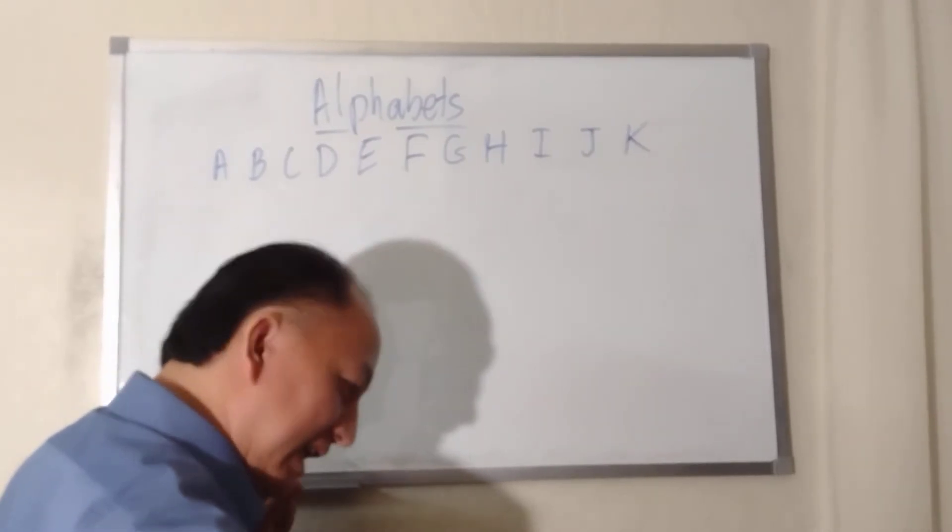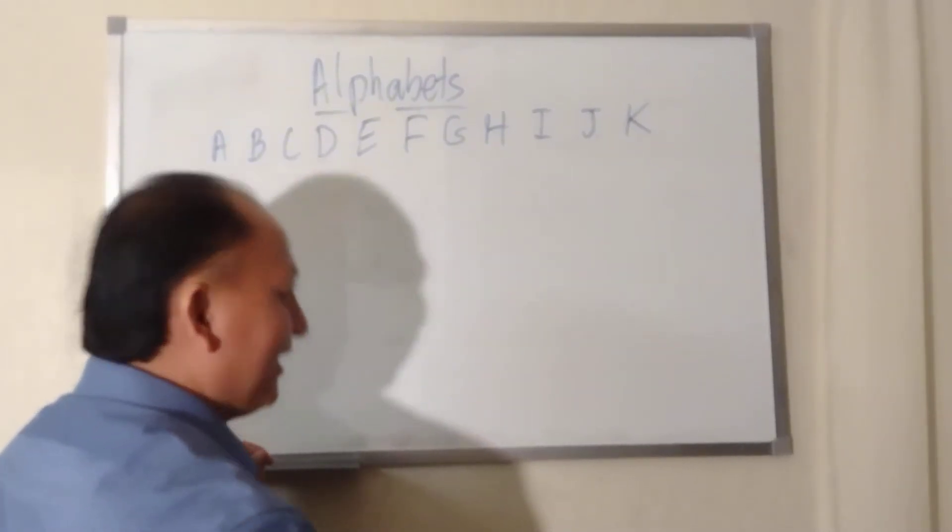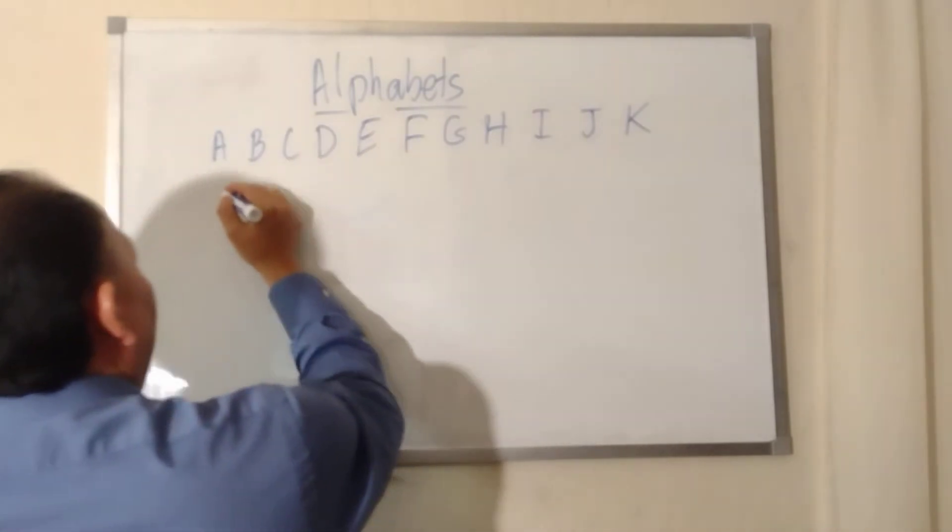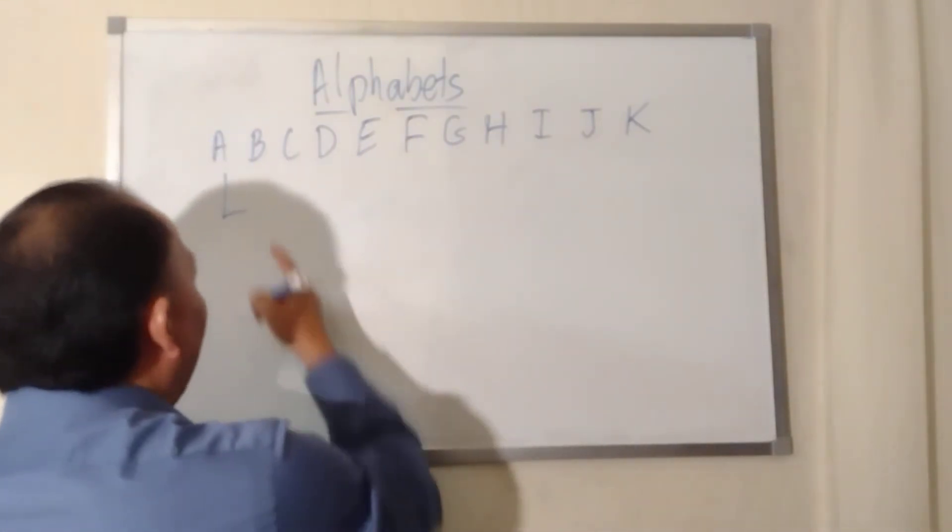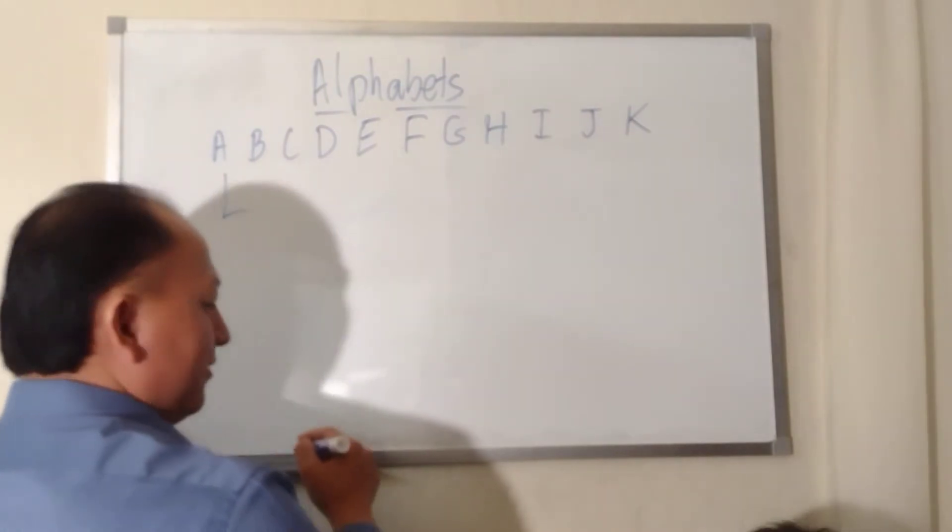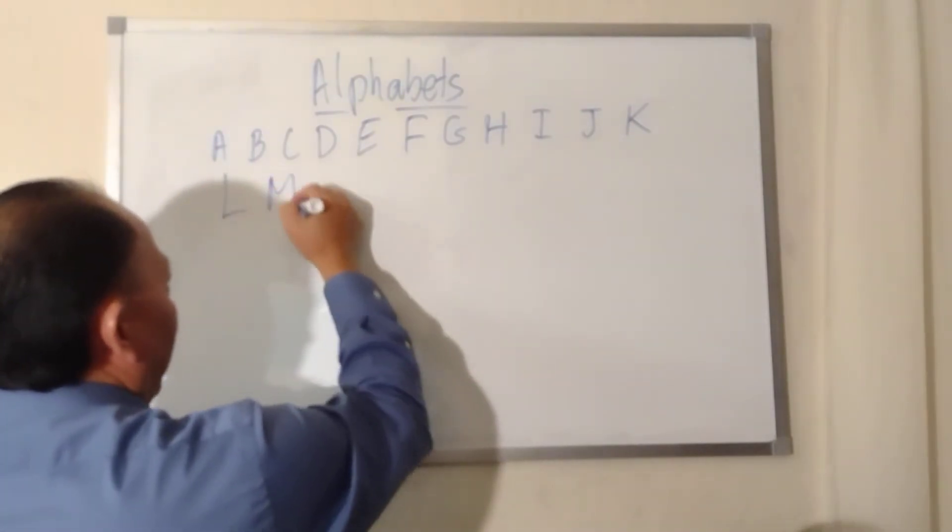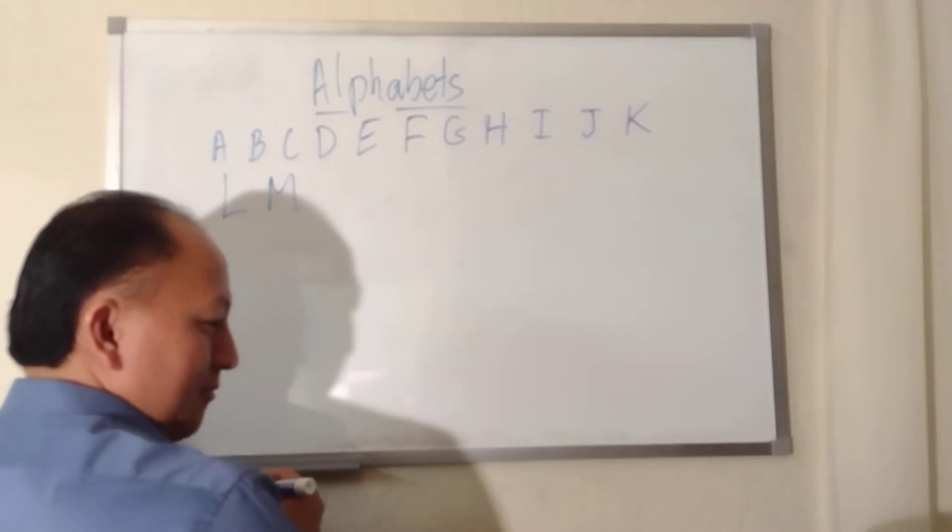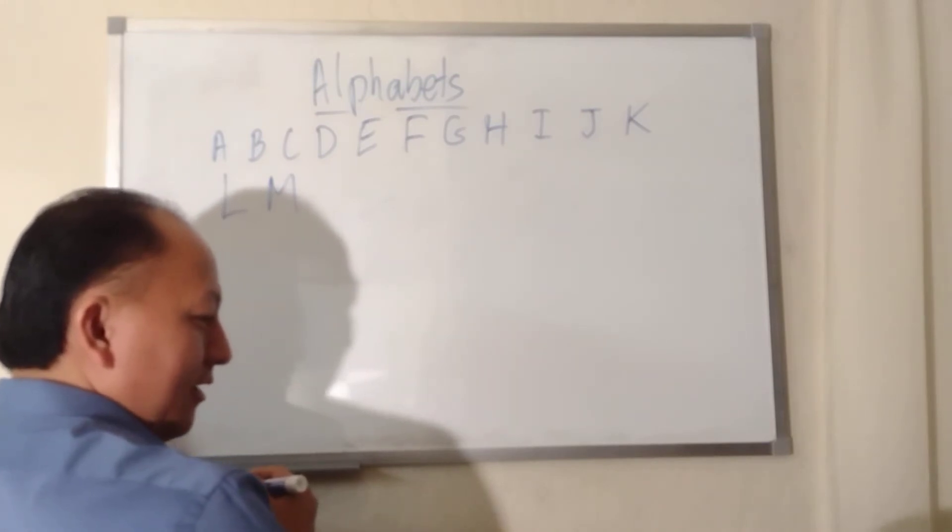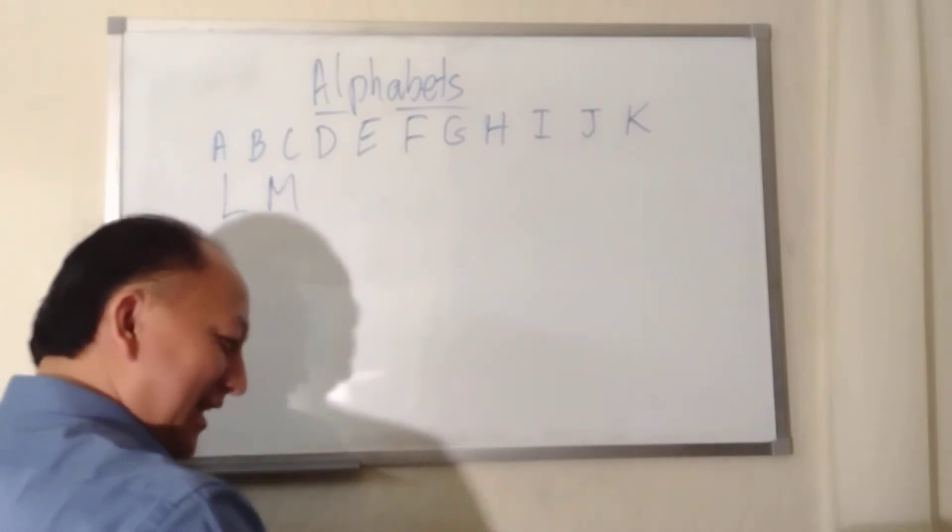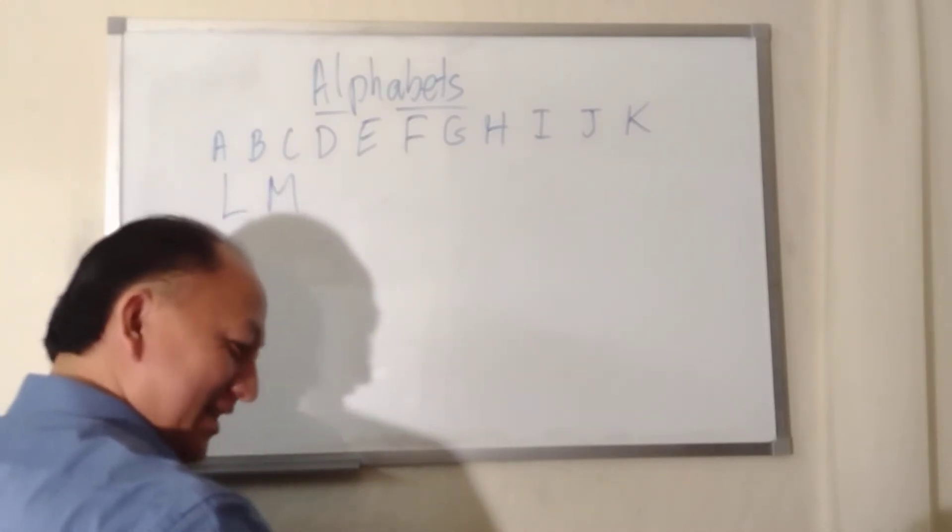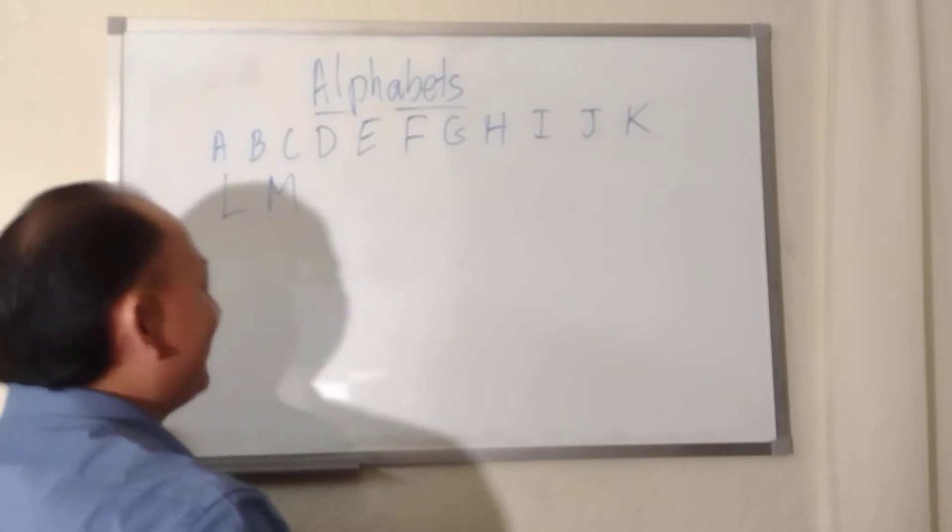L, lion. Lion's worm. Yeah, lion. M, monkey. Monkey's worm. Yeah, monkey eats a banana. Yes. Do you eat banana? No. No, you don't eat banana, right?